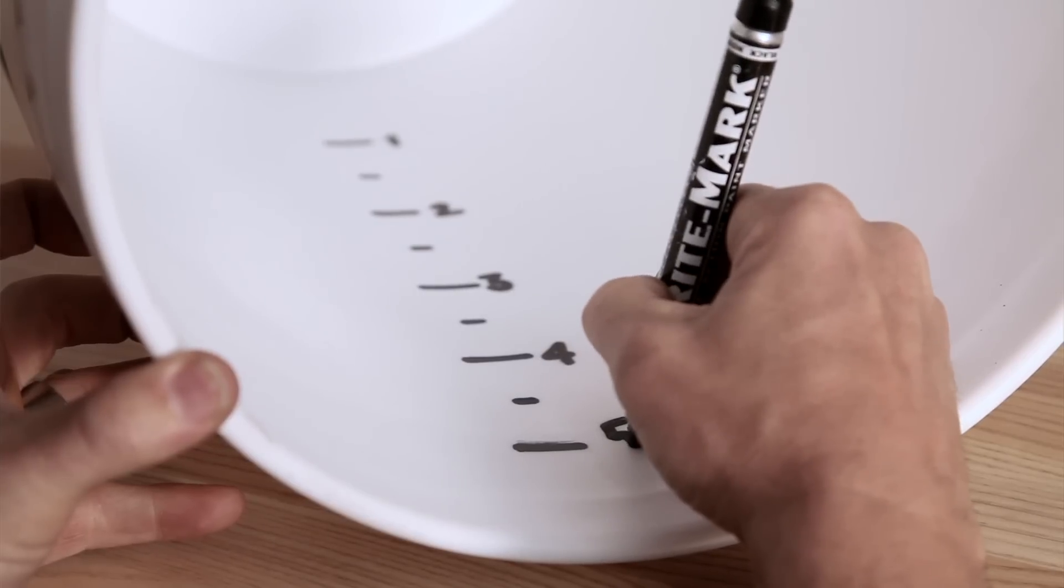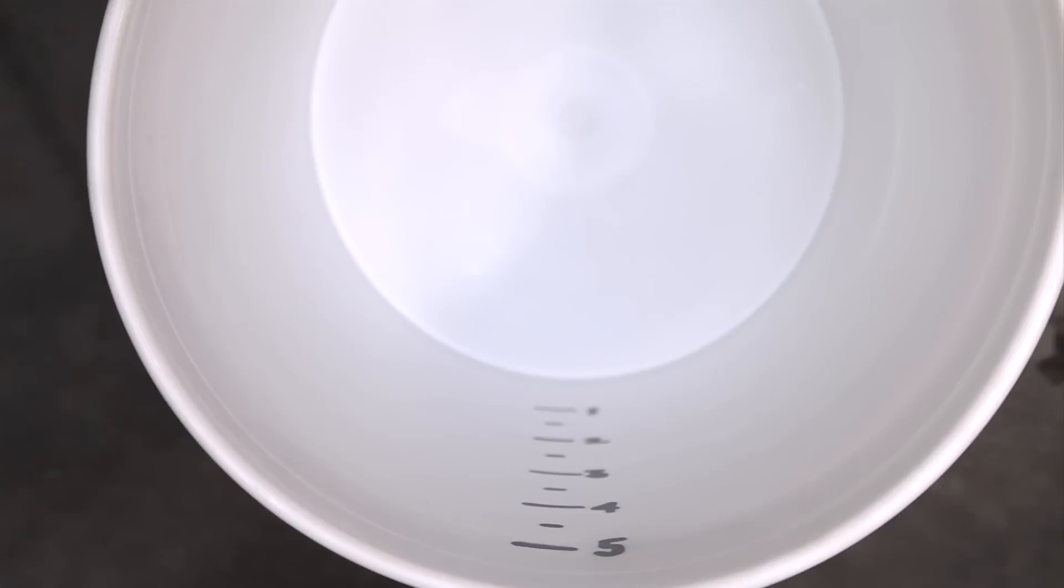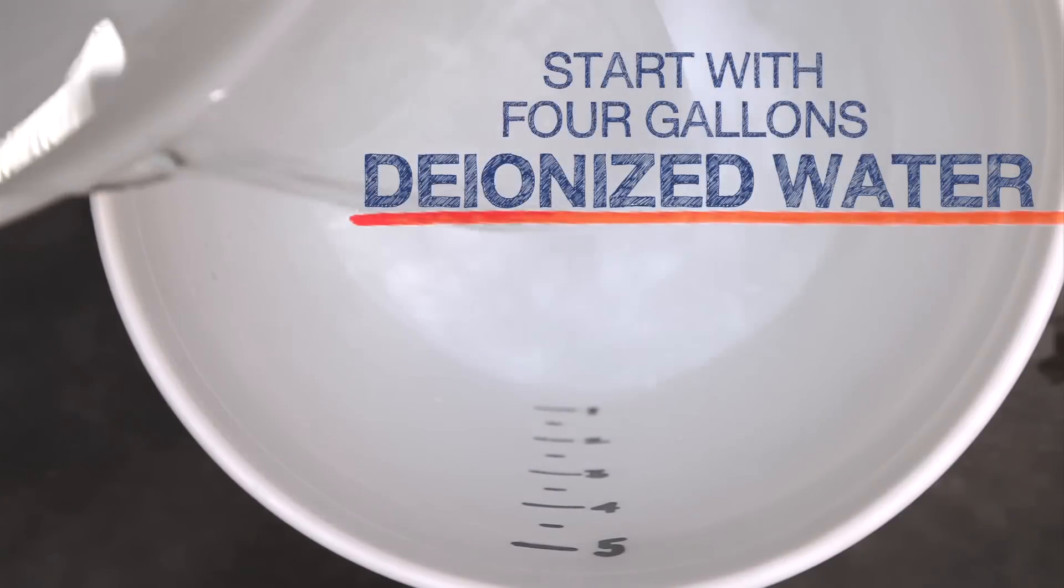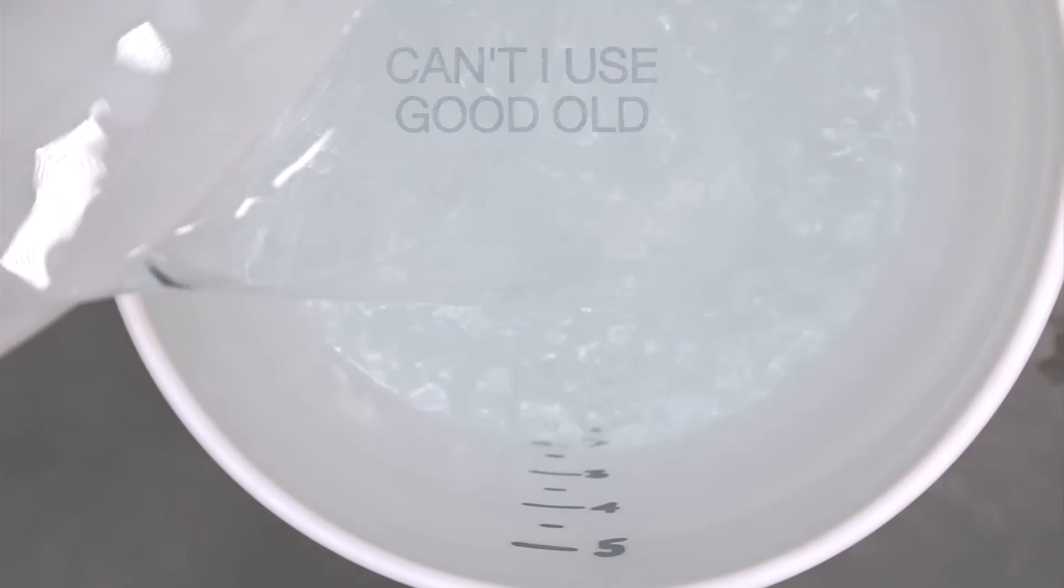We use a graduated bucket that we made with some simple measurements and start by pouring in four gallons of deionized water. You might ask why do I need to use deionized water to top up my tank? Can I just use tap water instead?